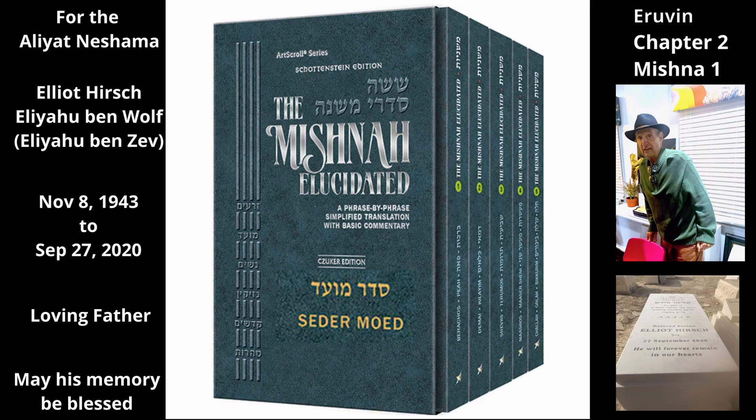These are the words of Rabbi Yehuda. But Rabbi Mayer says we require eight boards that look like twelve — that is, four double posts and four straight ones. As explained above, each double post looks like two boards, so the four double posts appear as eight boards. Rabbi Mayer also requires four straight boards, making a total of twelve.